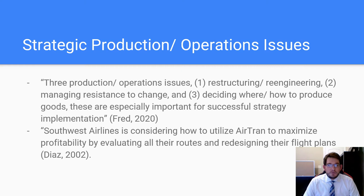There are three production and operation issues. One: restructuring and re-engineering. Two: managing resistance to change. And three: deciding where and how to produce goods. These are especially important for a successful strategy implementation, and all of these issues are equally important when looking into production and operation issues.